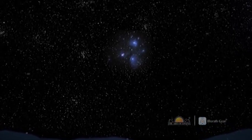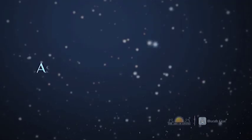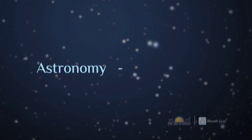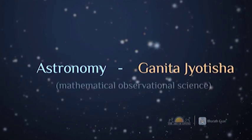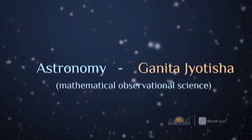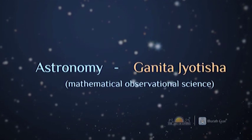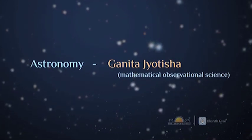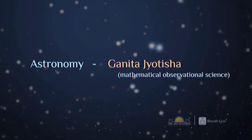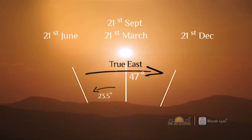When we call the science of astronomy as Ganita Jyotisha, it implies that everything in the sky can be pinpointed using mathematical calculations. For these calculations, one needs to know the true east and the equator of the sky throughout the year, to calculate every other star position from it.